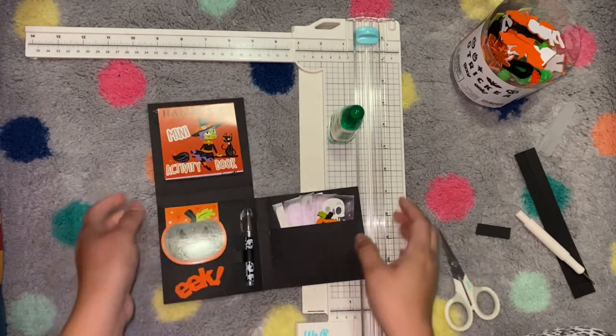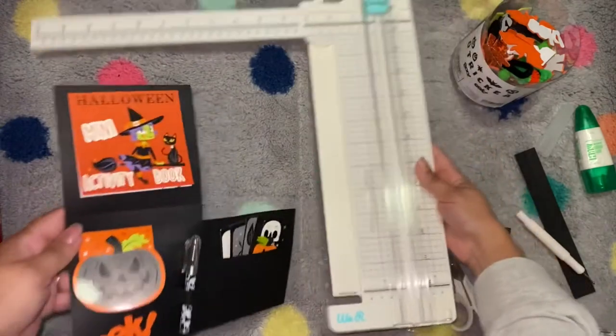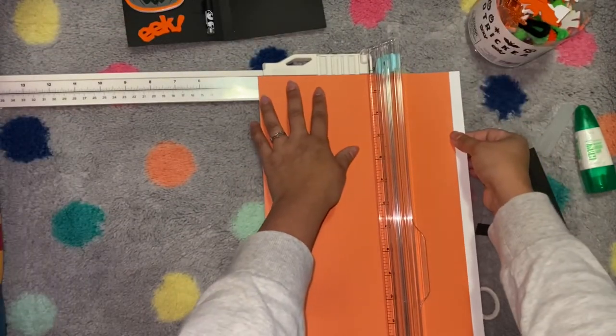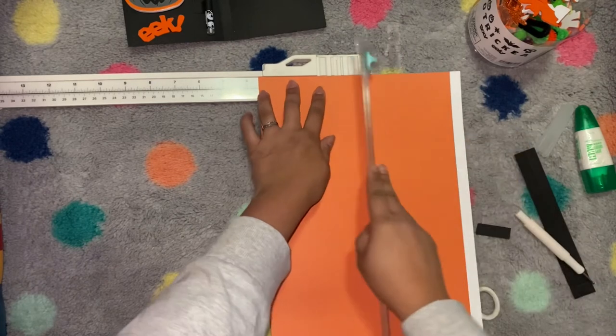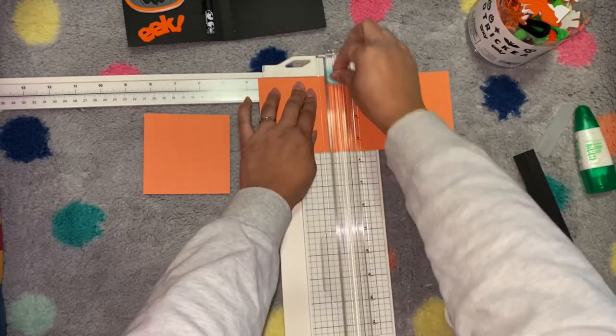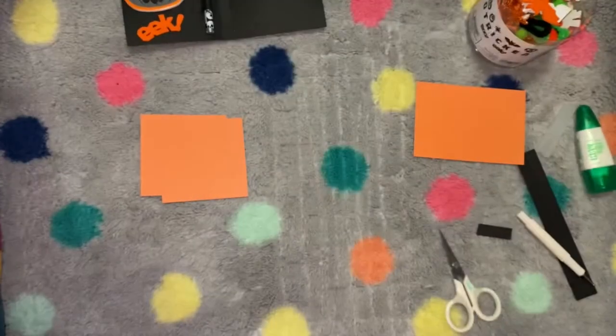And if I didn't say, I got those foam stickers at Target also in the Halloween section. Okay, so we're going to cut two contrasting colored squares. I have orange because Halloween. You're going to need three and a half by three and a half, so both of them will be three and a half by three and a half. And you don't need your paper cutter anymore.